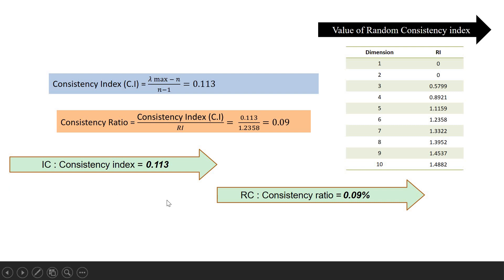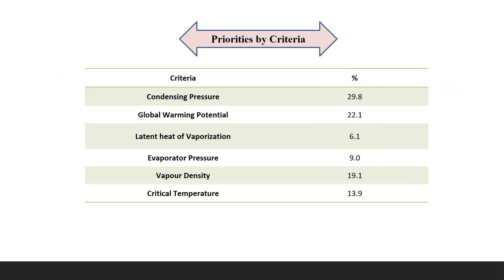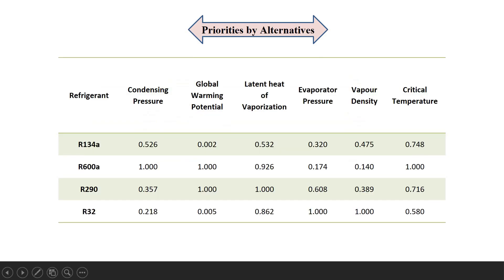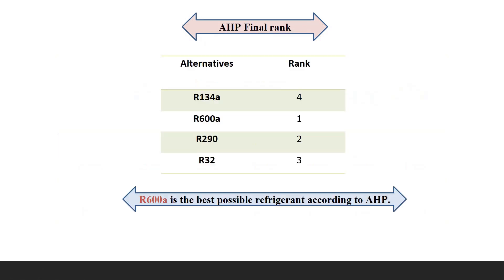The consistency ratio should be less than 1. Here are the priorities of the criteria, like for condensing pressure, global warming potential, and so on. Here are the priorities by alternatives, with these alternatives and their corresponding attributes. From the final AHP rank, we got R600A at the first rank. So R600A is the best possible refrigerant according to the AHP MADM method.